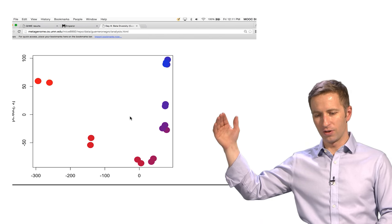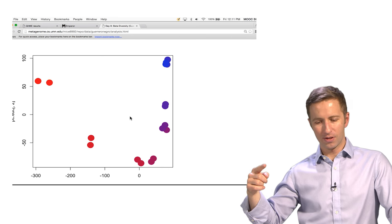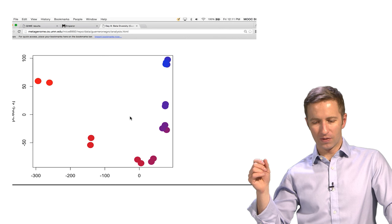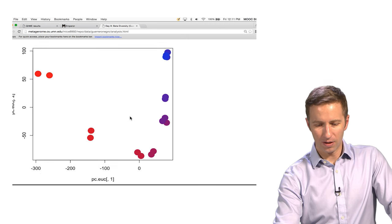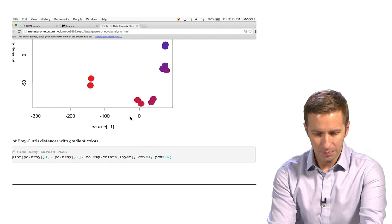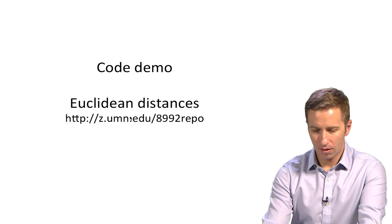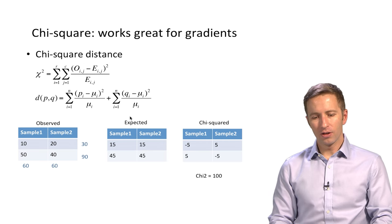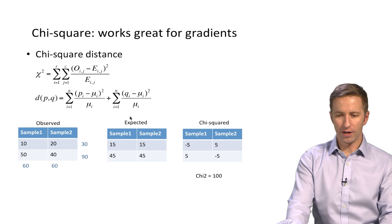So what can you see? Well, clearly there's some kind of gradient going on here, going from the shallow samples to the deep samples. Although it's not perfectly obvious and there might be some other ways that we can look at it. So that's what we get out of Euclidean. The next one we're going to look at is chi-square.